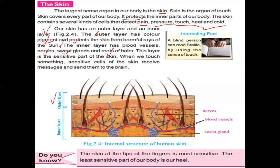When we touch something, sensitive cells of the skin receive messages and send them to the brain. Unlike the auditory nerve or retina cells in the eye, the skin has different types of cells to perceive different sensations. The fingertips are the most sensitive part of the skin, and the least sensitive part of our body is the heel of our foot — that is why we can walk for long distances.